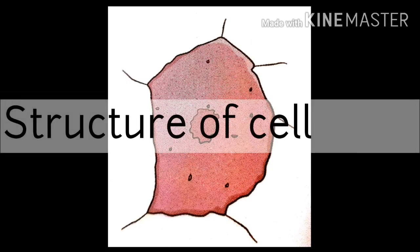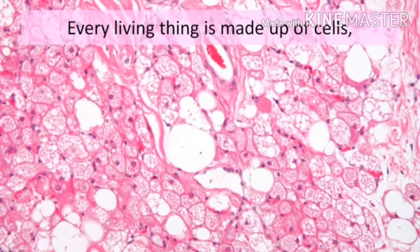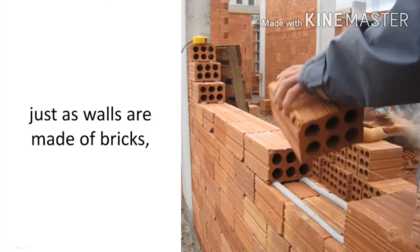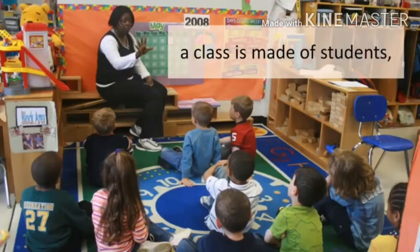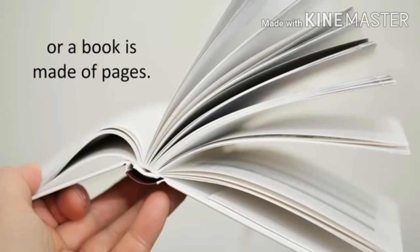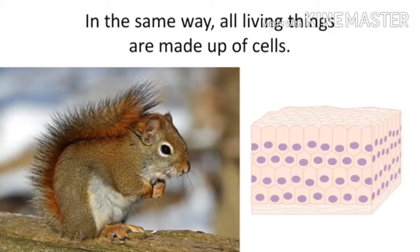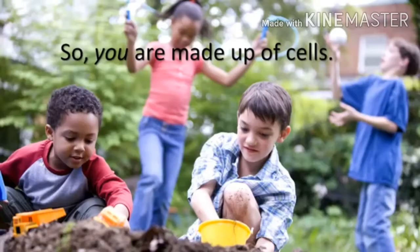This is the structure of a cell. Every living thing is made up of cells, just as walls are made up of bricks, a classroom is made up of students, or a book is made up of pages. In the same way, all living things are made up of cells. So, you are made up of cells.